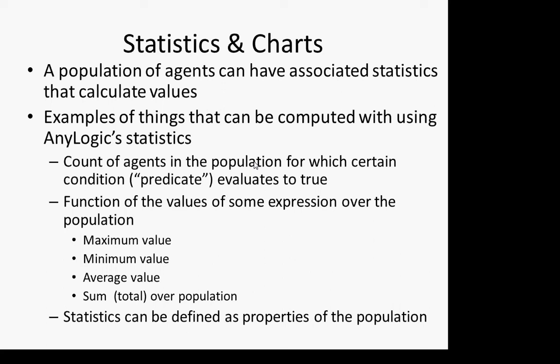You can also have criteria defined for counting the number of individuals that match some predicate — some condition — and it will handle the actual counting process. These statistics are defined with the population; when you have the population, you add statistics to it, which then allow other elements of the model like data sets and charts to count these things. Importantly, defining a statistic does not itself mean that statistic is computed. You define it, and then you can call that statistic to compute it from other places in your program.